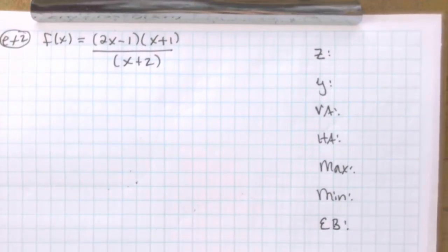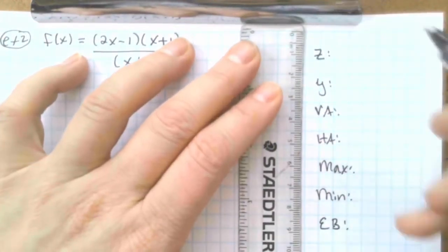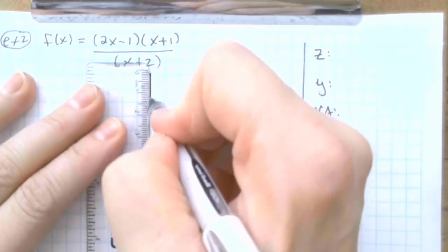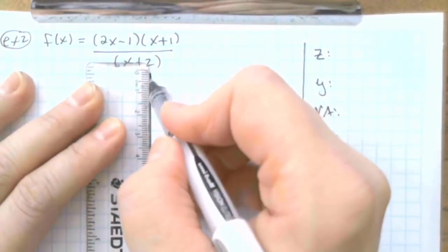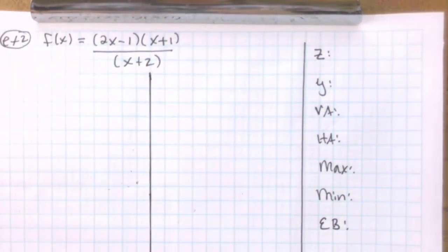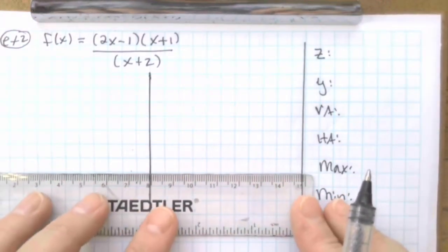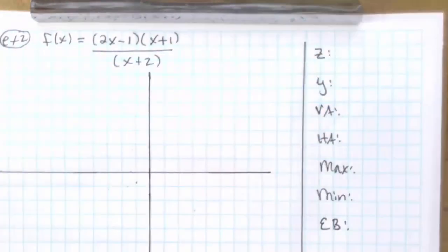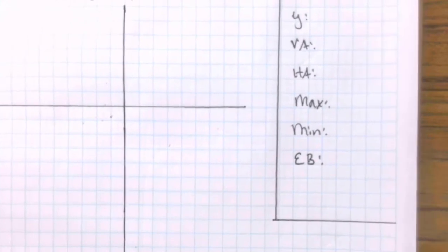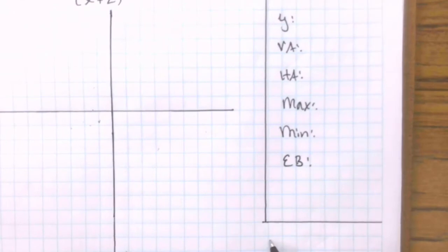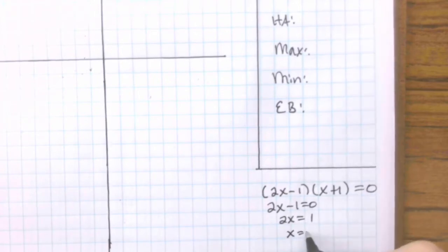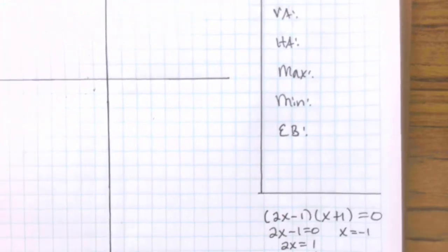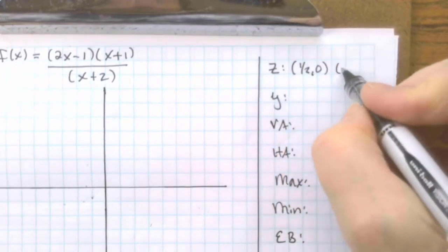I'm going to box off my laundry list to keep things tidy and give me space to work. For zeros, set y equals 0 and solve — take the top, which is 2x minus 1 times x plus 1, set it equal to 0. Set 2x minus 1 equal to 0: you get 2x equals 1, so x is 1 half. The second factor gives x is negative 1. So my zeros are 1 half comma 0 and negative 1 comma 0.